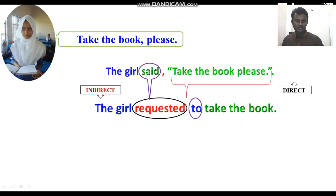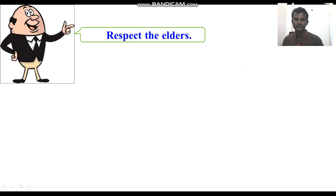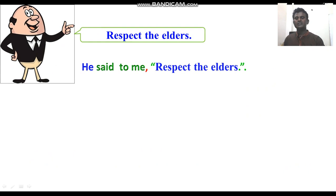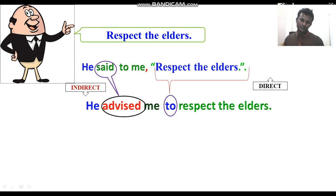For example: 'He said to me, respect the elders' — here 'said' has become 'advised' because the reported speech indicates advice, and the inverted comma is replaced with 'to' because the reported speech indicates an advisory imperative.